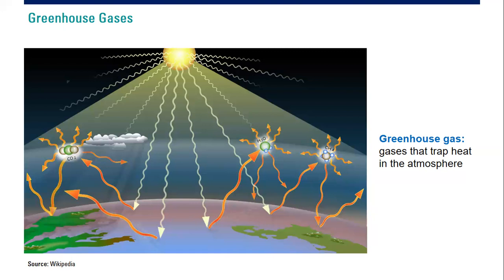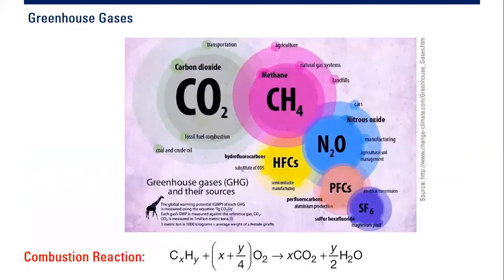There are many greenhouse gases — as you can see from this picture: carbon dioxide (CO2), methane, nitrous oxide (N2O), hydrofluorocarbons, perfluorocarbons, and sulfur hexafluoride. But when we look at the concentration — the amount of these gases in our atmosphere — the number one is CO2, carbon dioxide.